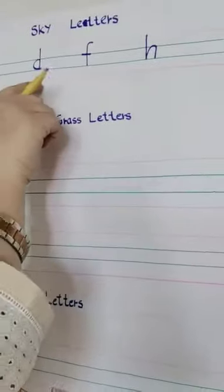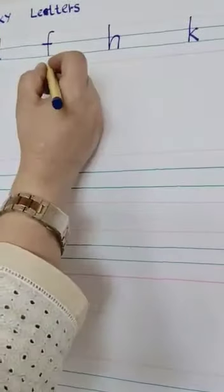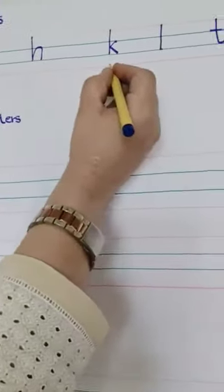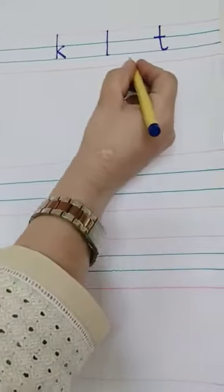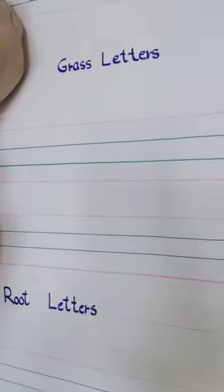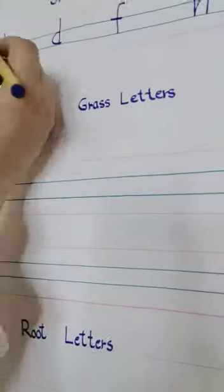They are D, D, F, H, K, L, T. These all are skylighters because they start with skylines.